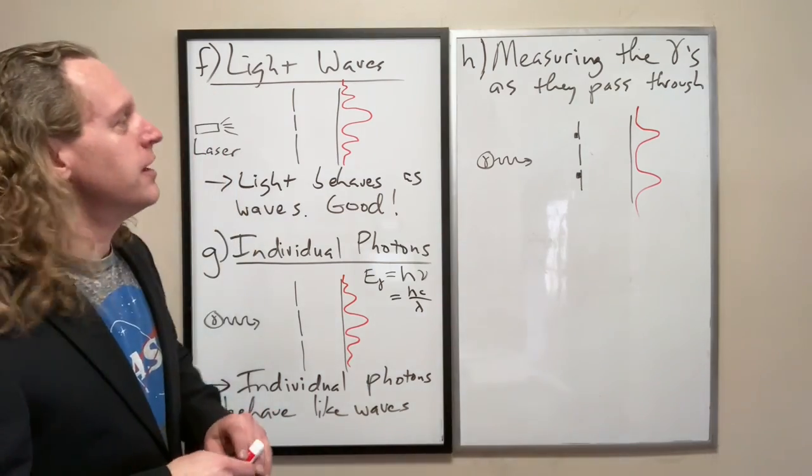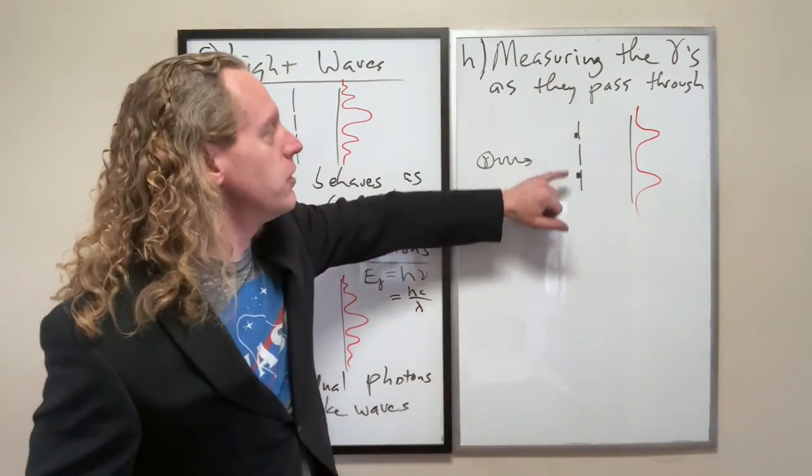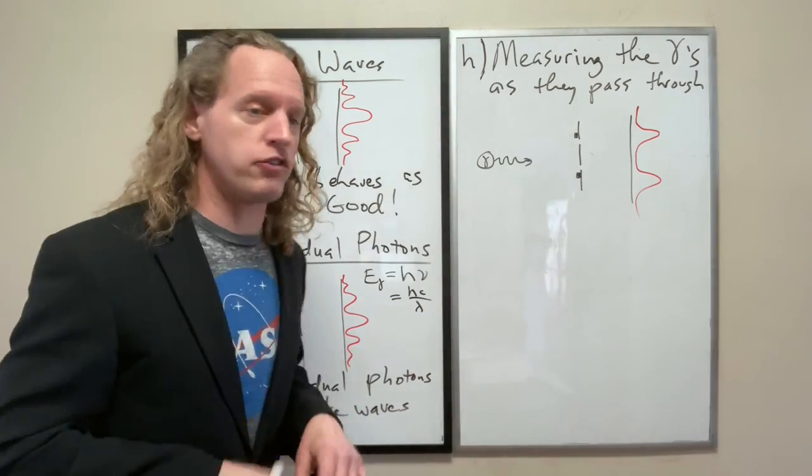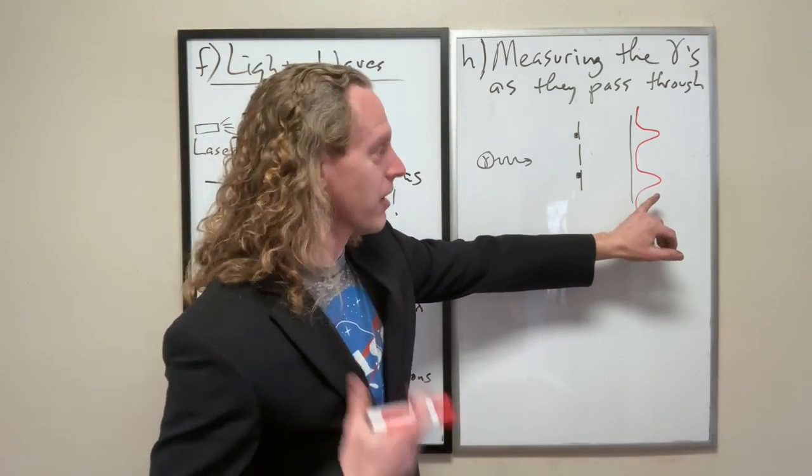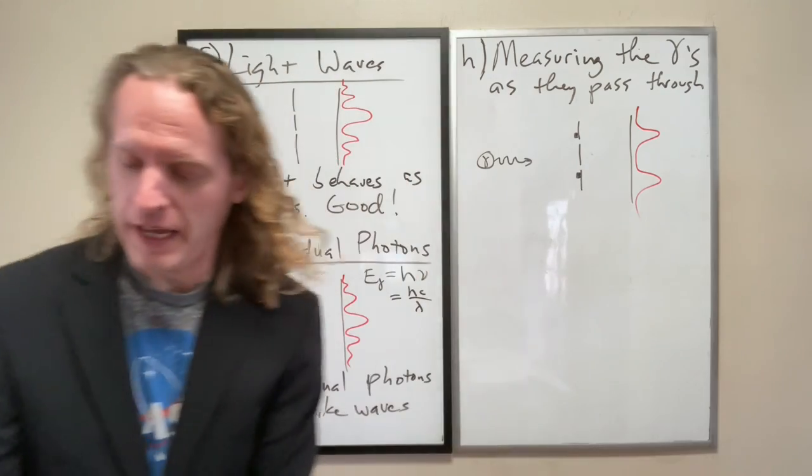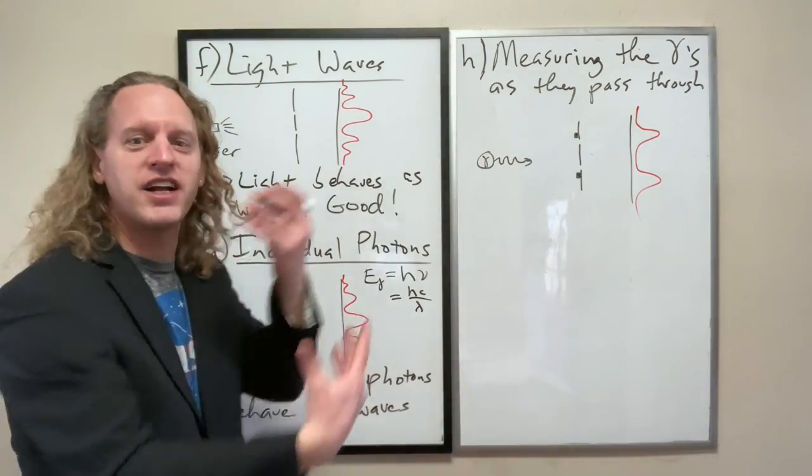That's what happens. Just like with electrons, by measuring what's occurring, we fundamentally change what's occurring. The results are entirely different. And now, this is where things kind of come full circle.